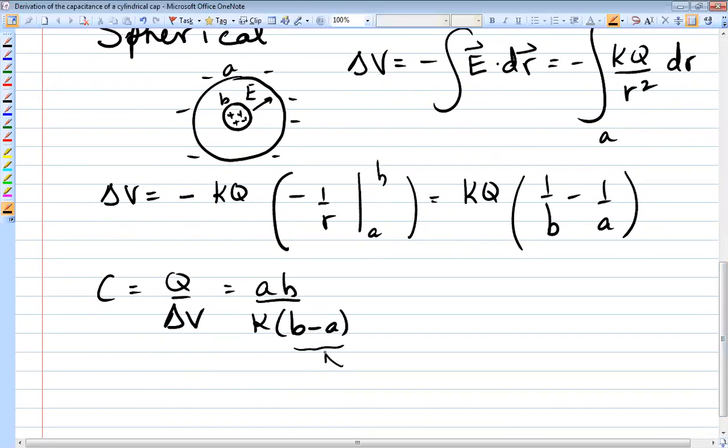And the closer together the inner and outer spheres are in radius, the bigger the capacitance. So you want a small gap. Small gaps make big capacitance. Okay, so that's the end of that. Thank you.